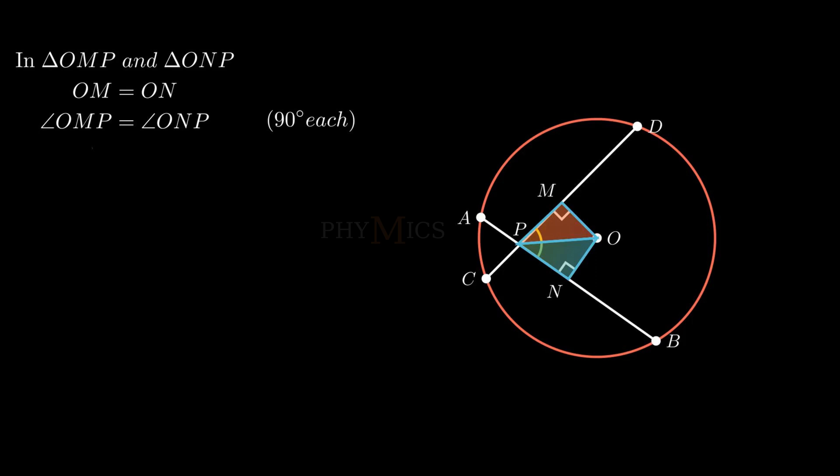Therefore, by RHS congruency, triangle OMP is congruent to triangle ONP. By corresponding parts of congruent triangles, we conclude that angle OPM is equal to angle OPN.